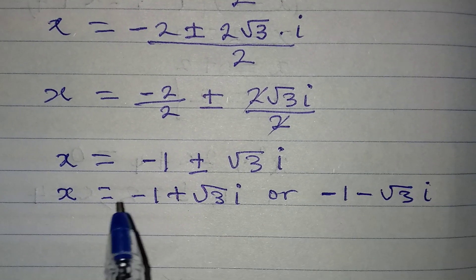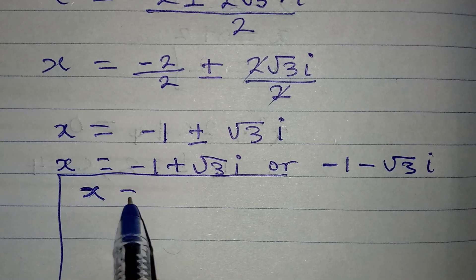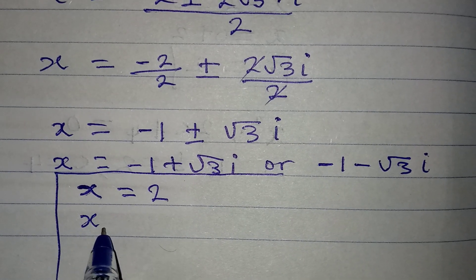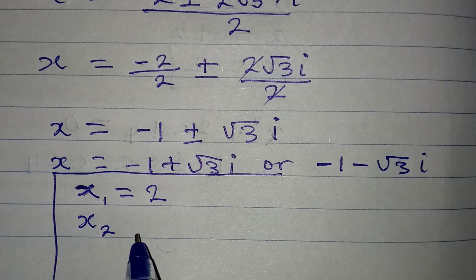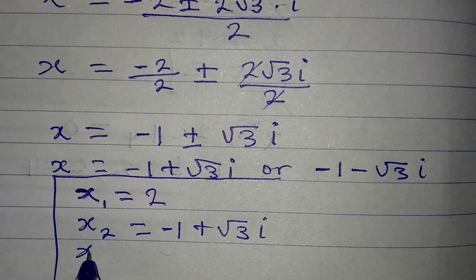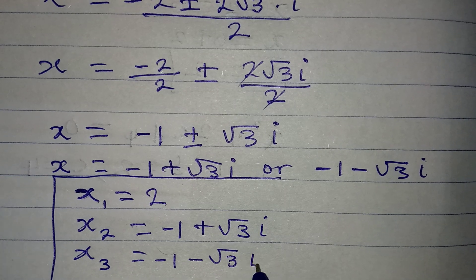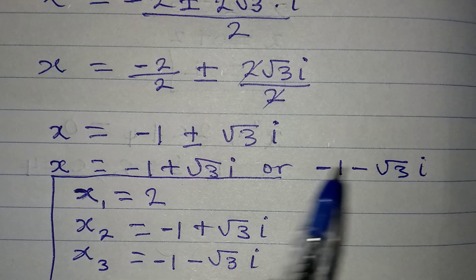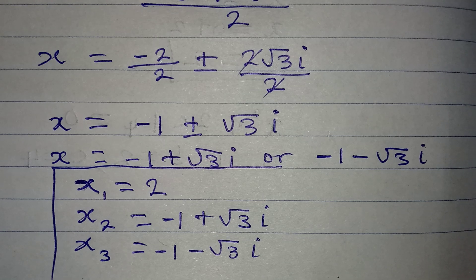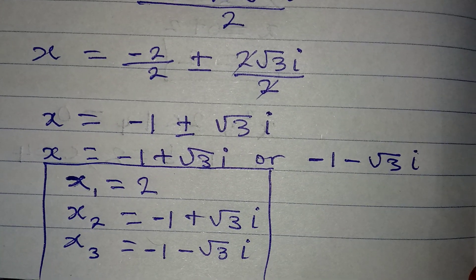Now let me bring the three solutions together. The first solution is x1 equals 2, and this is the only real solution. The second solution, x2, equals minus 1 plus square root of 3i. And then x3 equals minus 1 minus square root of 3i. So these are the three solutions to the problem. x2 and x3 are not real solutions because of the imaginary number. These are the three solutions if you're to find everything complete. Thank you for watching.